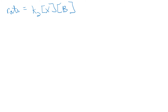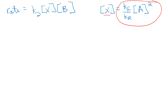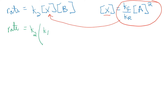From the equilibrium, concentration of X equals (kf / kr) times concentration of A squared. So we substitute: rate equals k2 times (kf / kr) times A squared, multiplied by the concentration of B.